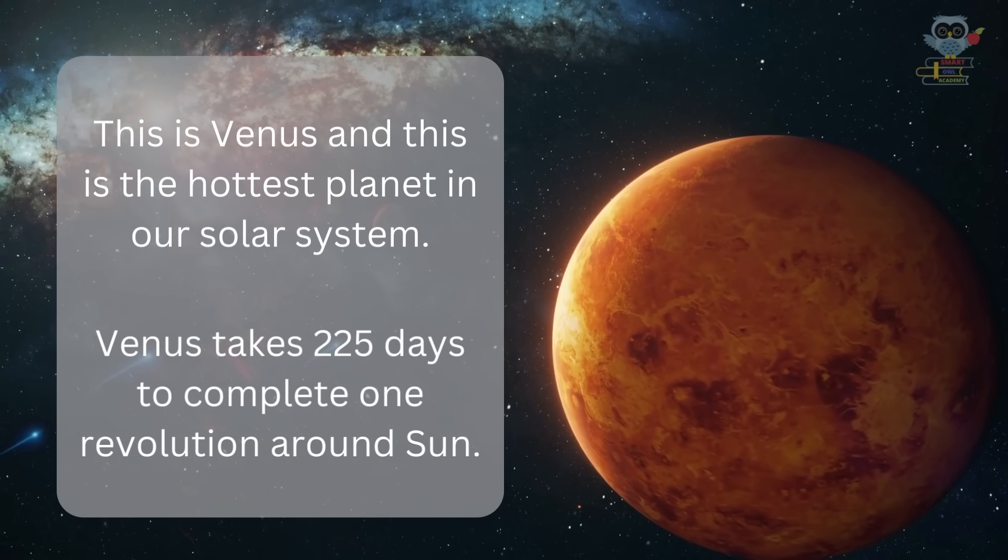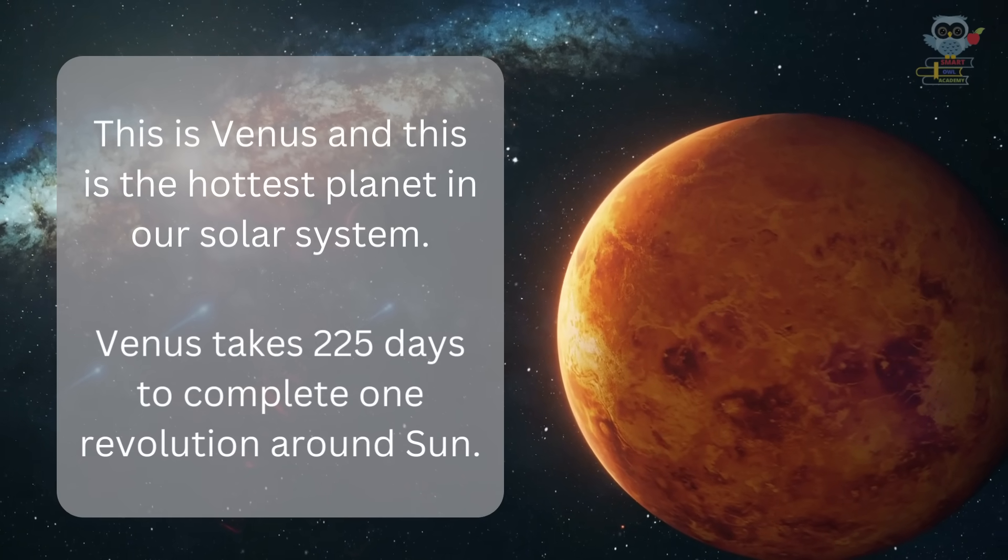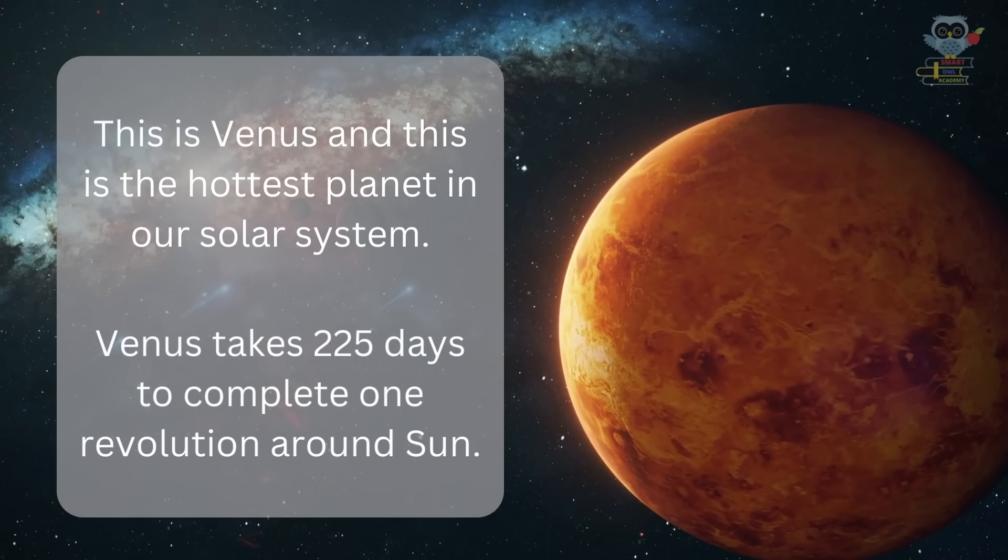This is Venus, and this is the hottest planet in our solar system. Venus takes 225 days to complete one revolution around the Sun.